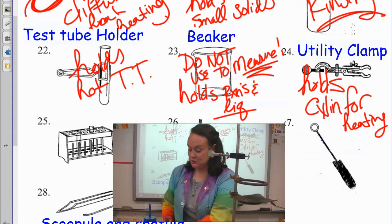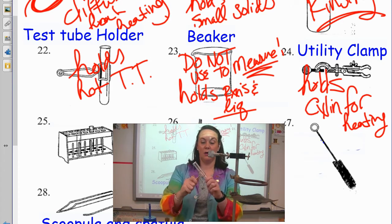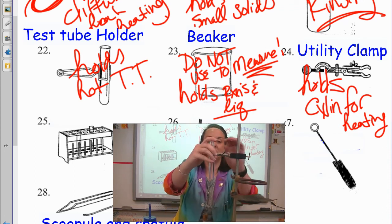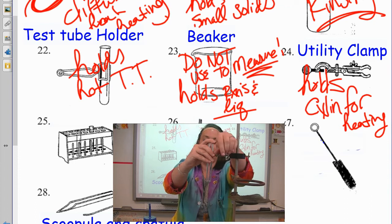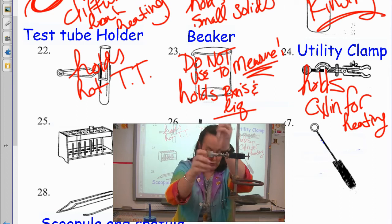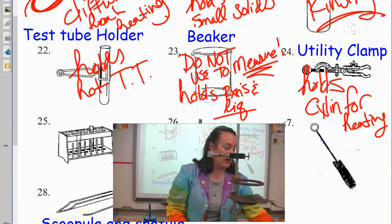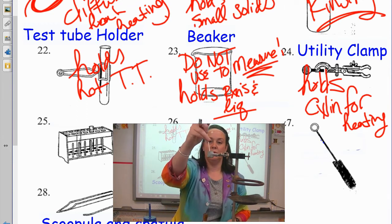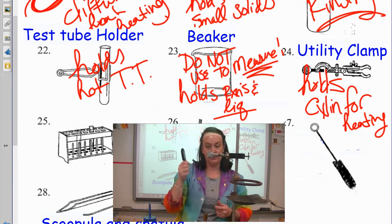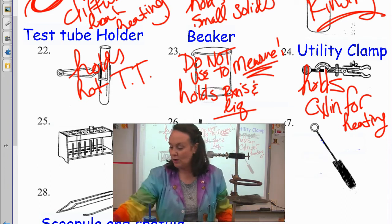So you can take a test tube. If you didn't want to hold it with the test tube holder and you wanted to heat something, you can put the test tube in here, clamp it down, and then now we're heating a test tube without having to get near the heat. You can also use it to hold a thermometer. If we were trying to take the temperature of some water, things like that. So it just holds round things, cylinders, for heating.